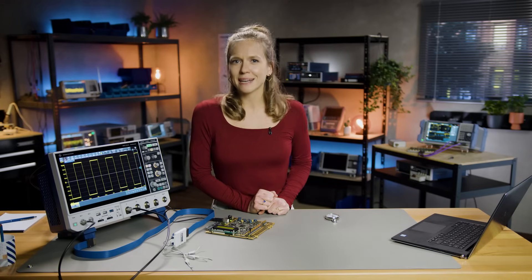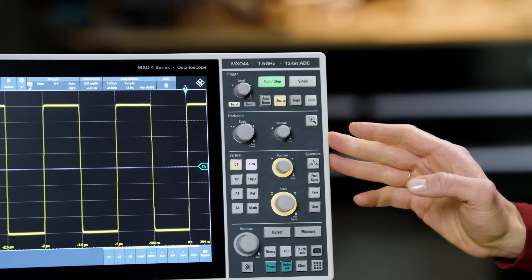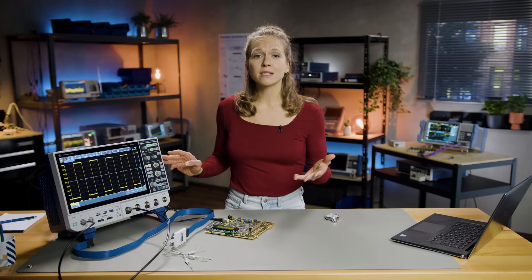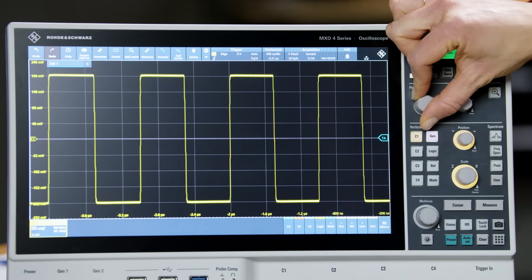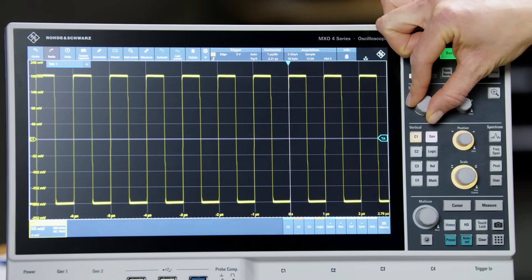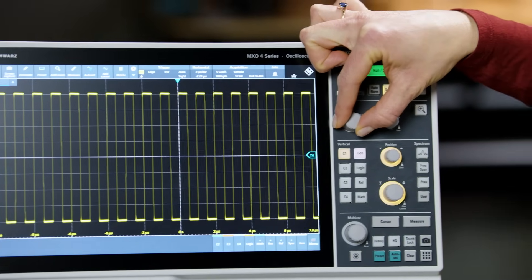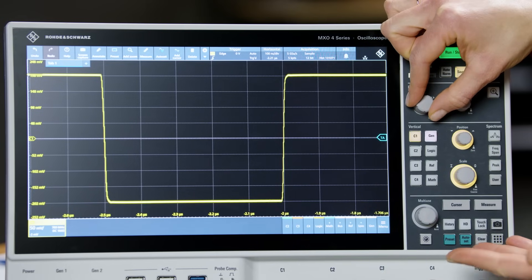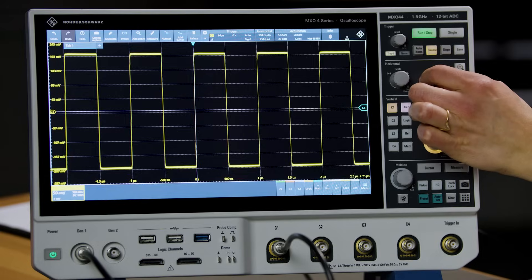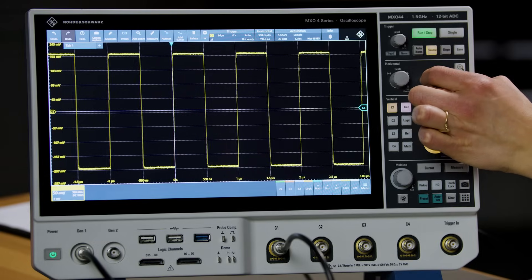Now let's move on to the next section, the horizontal system. This section allows you to vary the time axis, thereby controlling the duration or the amount of the waveform being displayed. By turning the horizontal knob, we can display, for example, one full period of the signal or many more. The time per division is displayed at the bottom of the screen. Once again, use the position knob to move the waveform left and right on the screen.